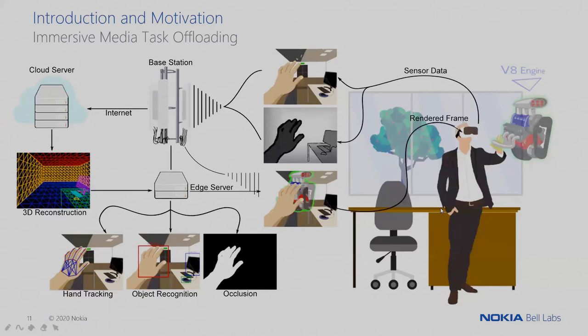This slide represents our idea for immersive media task offloading. The device continuously sends sensor data to a base station or wireless receiver, which can be connected to the internet and a cloud server for non-real-time procedures. It is also connected to an edge server where the real-time and heavy-duty algorithms run. Once the data is processed, it is sent back to the device, which is in charge of rendering the processed frame — and this is the pipeline we have in mind.